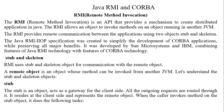If there is a distributed application to create, we use RMI. RMI basically allows invoking another method that exists in another address space. RMI allows an object to invoke a method on an object running on another JVM.